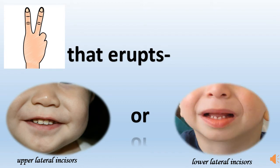The second teeth to erupt are usually the lateral incisors — those teeth present beside the large central front teeth. Most commonly, the upper lateral incisors erupt before the lower lateral incisors, but if the lower lateral incisors erupt before the upper ones, that's also not a problem. Either of these situations is normal and either can come before the other.